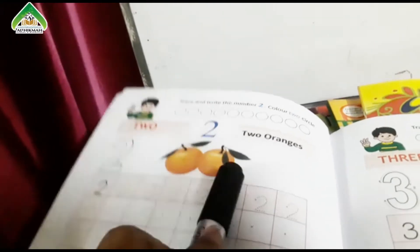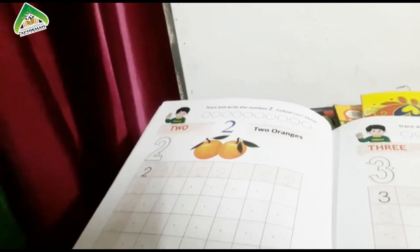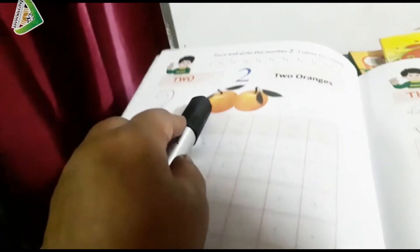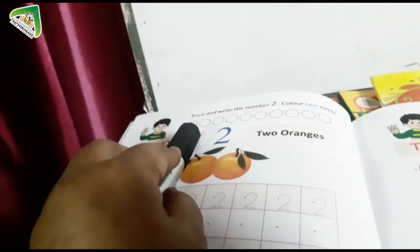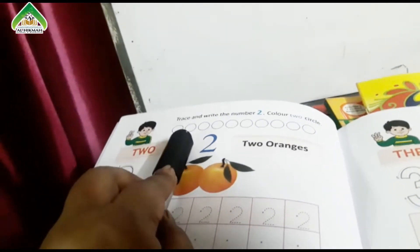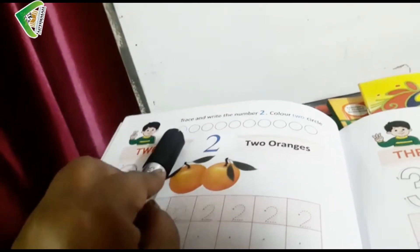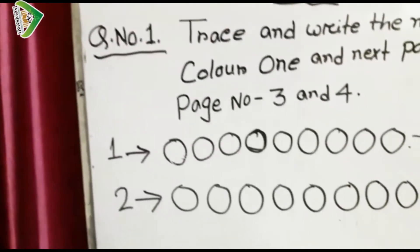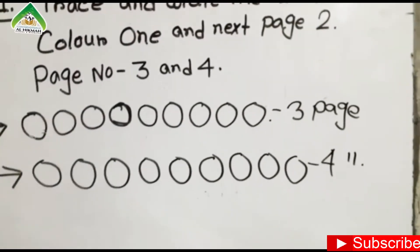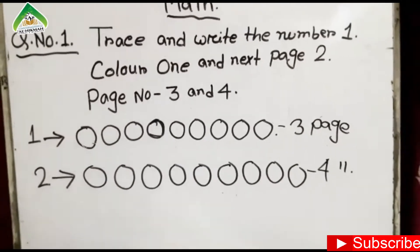This is two, number two. Complete the two pages as homework. How many circles? Many circles. Color two circles with orange color — one, two. Color them orange. Page number three is one, and page number four is two. You have math class — complete it, okay?